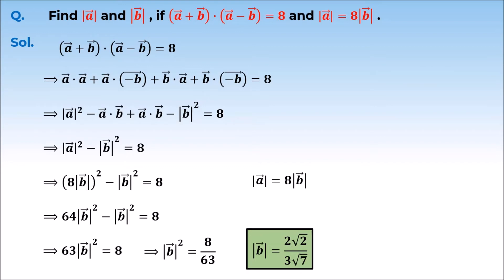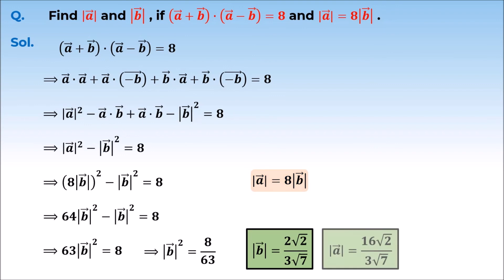We need to take care of magnitude, that's why we take the positive value. If we substitute this value — since magnitude of A vector is equal to 8 times magnitude of B vector — then magnitude of A vector will be 16 root 2 upon 3 root 7. So we have found magnitude of vector A and magnitude of vector B.